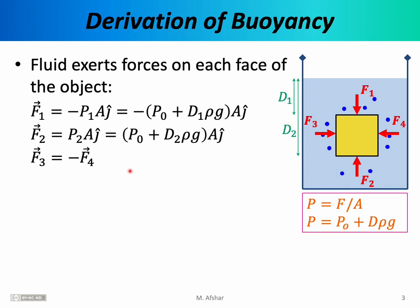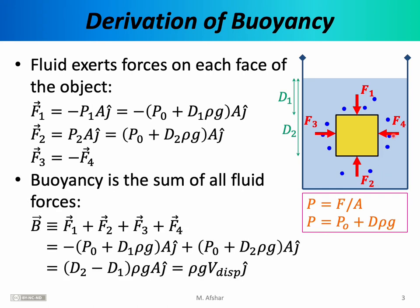The buoyant force is the net force exerted by all the fluid surrounding the object — that is, the sum of F1, F2, F3, and F4. To be complete, you can also add F5 and F6, but F5 and F6 are equal and opposite, so they add up to zero — just as F3 and F4 add up to zero. So the important forces are really just F1 and F2.